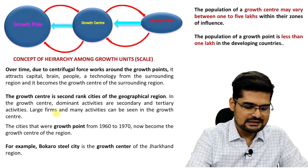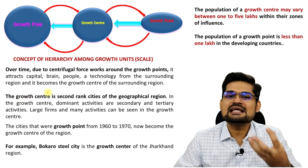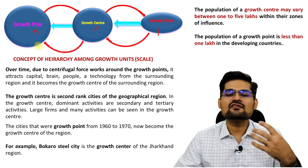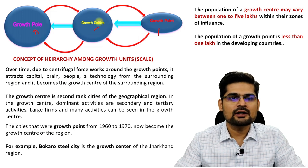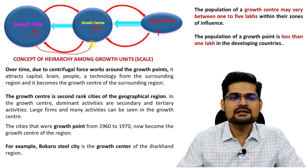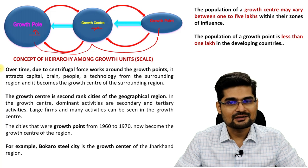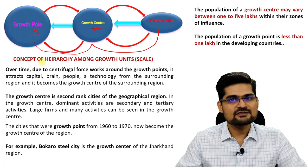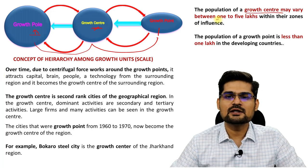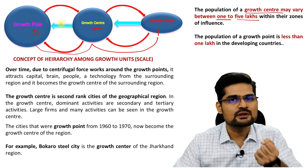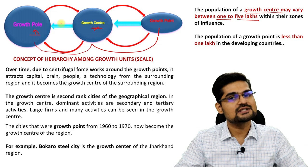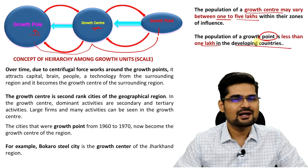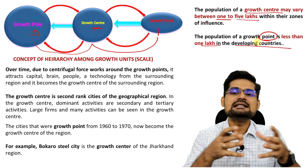Let's elaborate on the concept of hierarchy among growth units — the scale. The growth point, growth center, and growth pole and their linkages were devised by Boudeville. From growth point to growth center to growth pole, forward and backward linkages are important. According to Boudeville, the population of a growth center may vary between 1 to 5 lakhs within their zones of influence — the area to which they provide goods and services. The population of a growth point, the smaller one, is less than 1 lakh, especially in developing countries. This was his assumption in the 1960s.